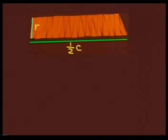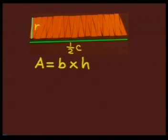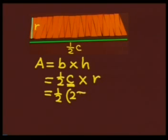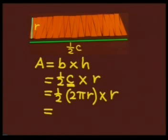We have the base and the height — let's work out the area of the circle. We know that the area of a rectangle is given by A equals base times height. The base is equal to half of the circumference, and the height is represented by the radius r. We found previously that C equals 2πr, so we substitute and get: one-half times 2πr, multiplied by r. This simplifies to πr times r, which gives us πr squared. Now we know the formula for the area of the circle.